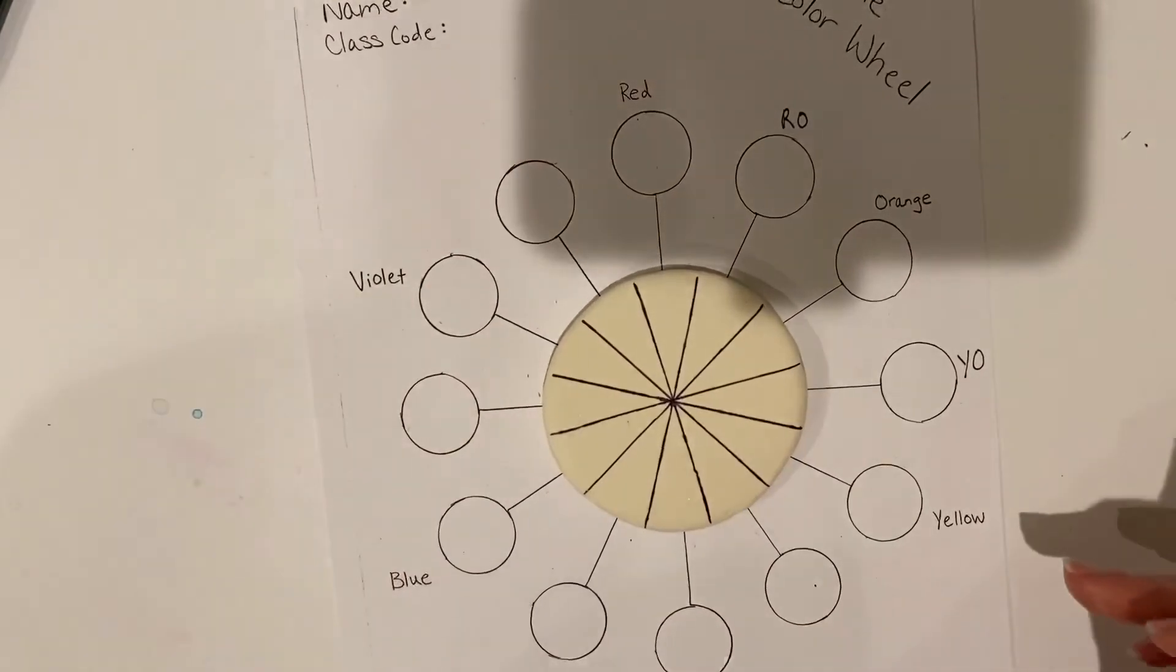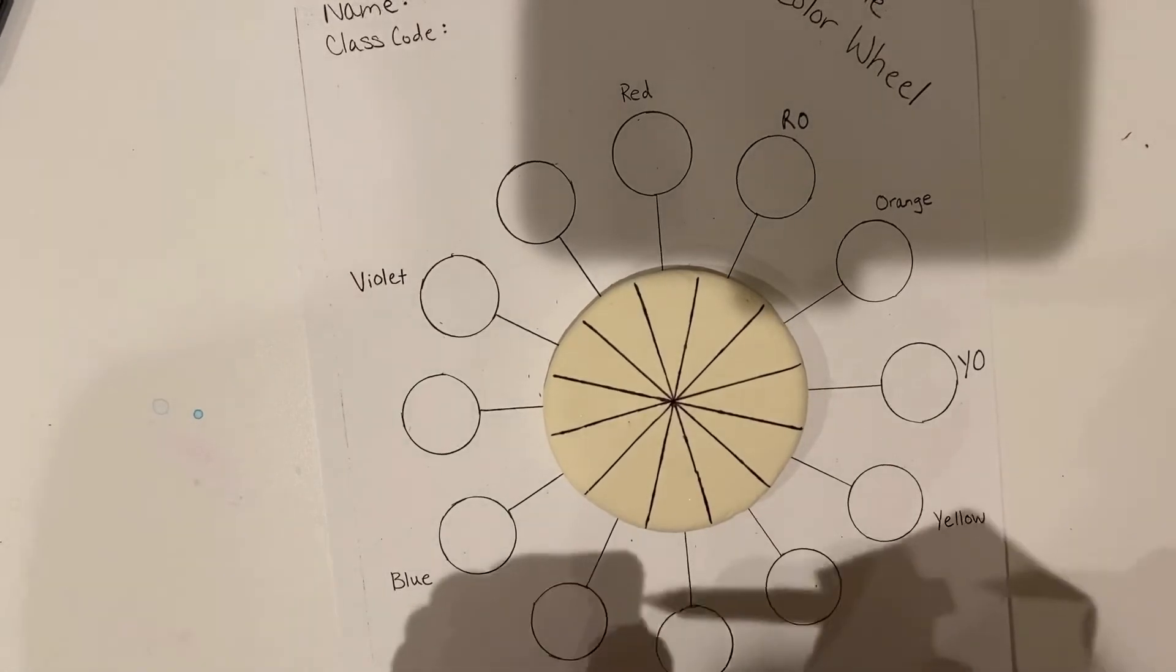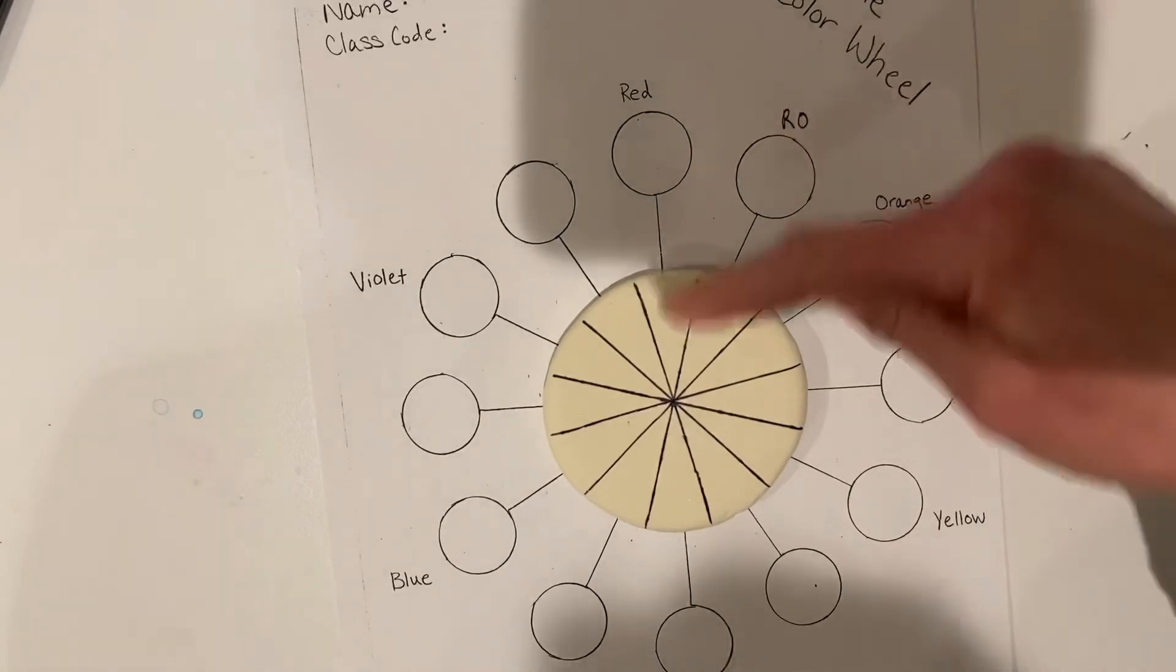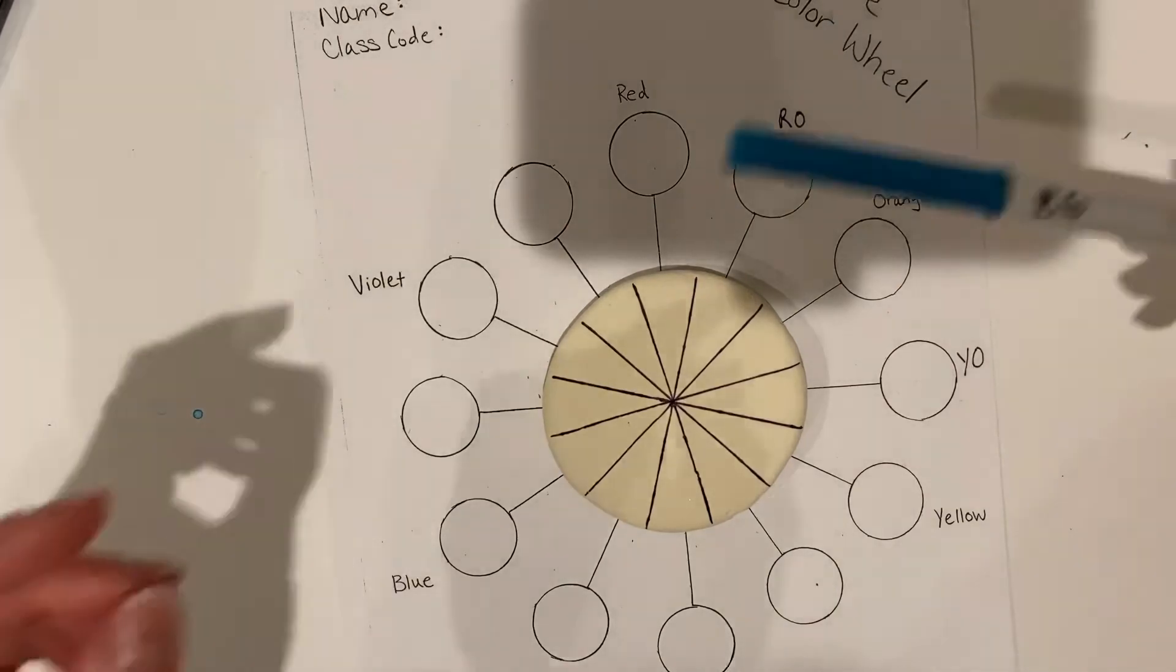You can look at the color wheel that I'll have up in the classroom to help you with that. It doesn't really matter where you start coloring, as long as before you start, refer back to what you have written here to make sure it lines up. And then the intermediate colors that you'll be using are actually marked with the letters on it.